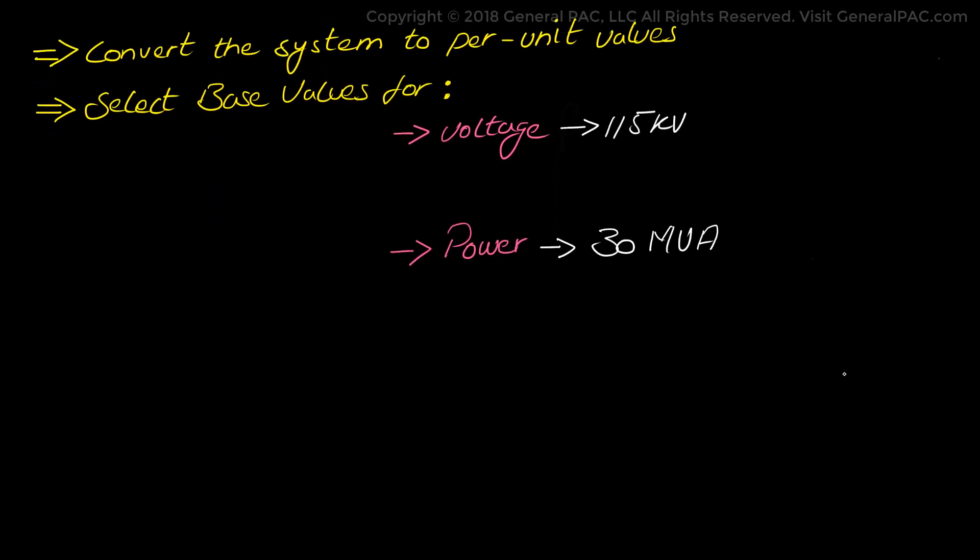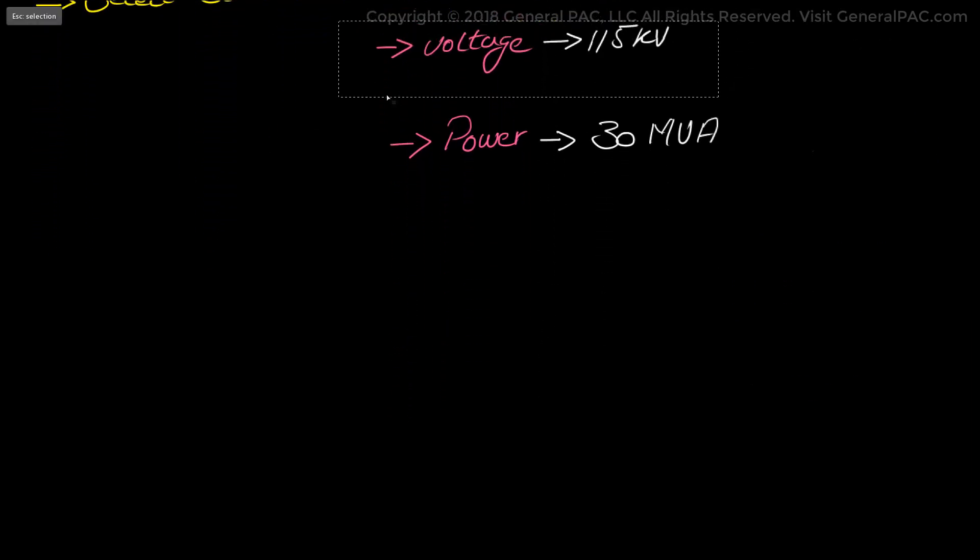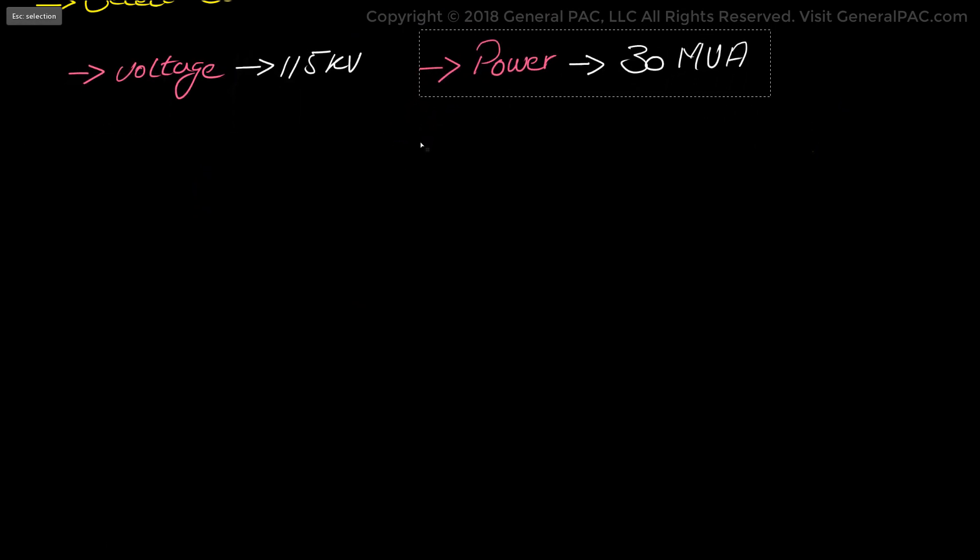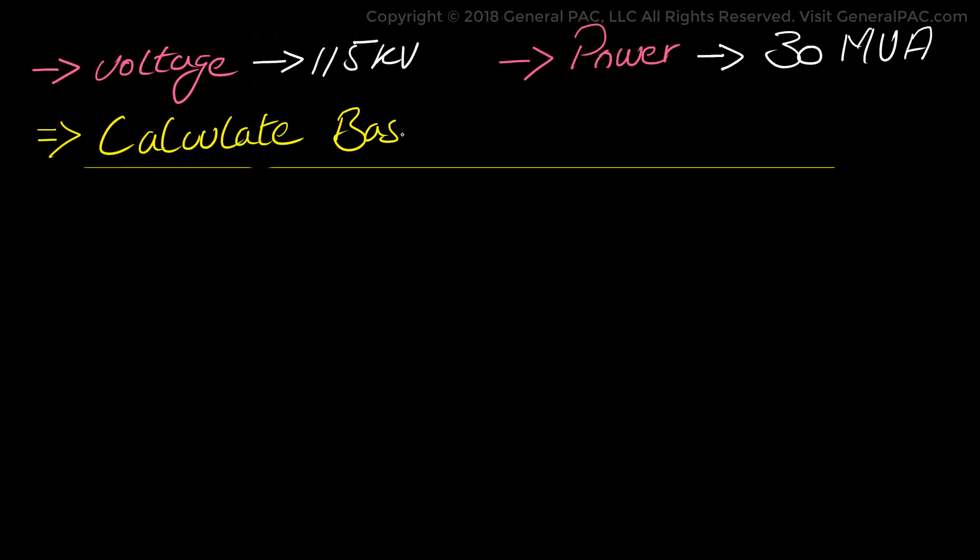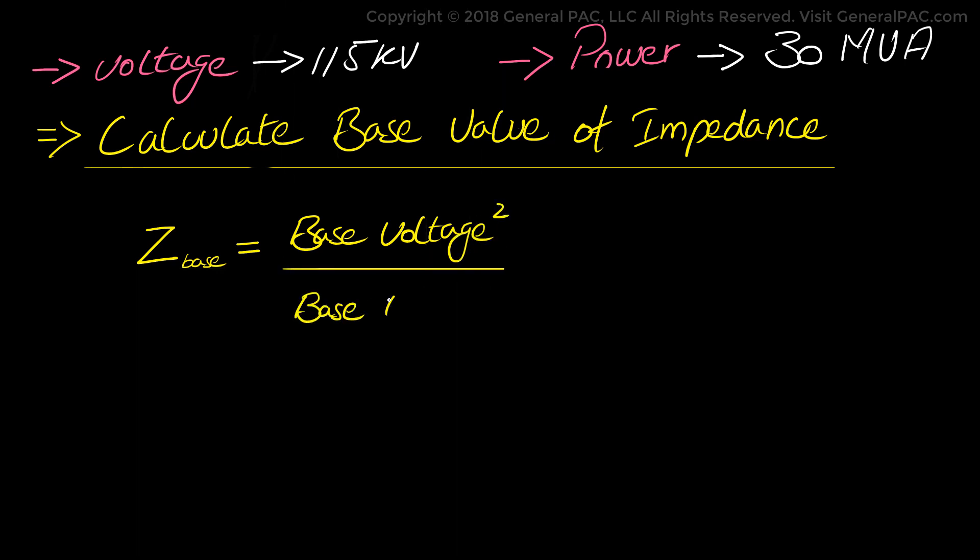Now we will see the advantage of this down the road but let's continue. Now given the base value of the voltage and power we can now calculate the base value for the impedance. Which is really simple. The impedance base or the Z base will equal the base voltage divided by the base value of power. That is just our old formula which is P equals V squared divided by R. We are just rearranging it to solve for R, in this case Z.